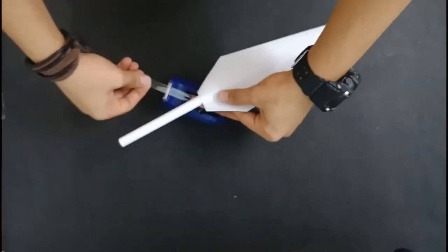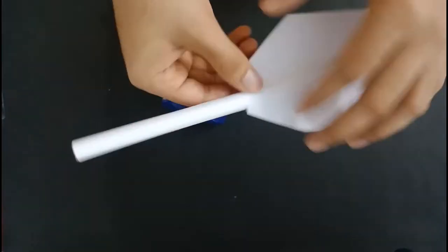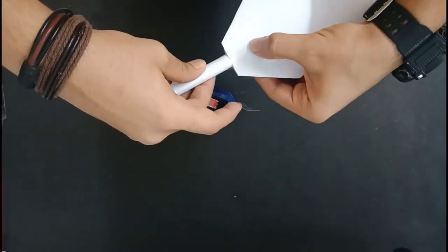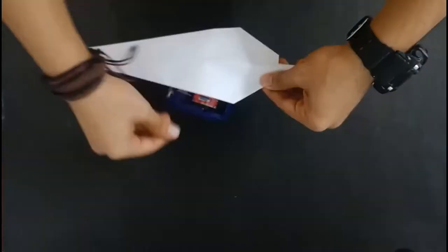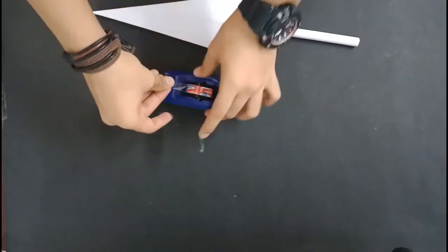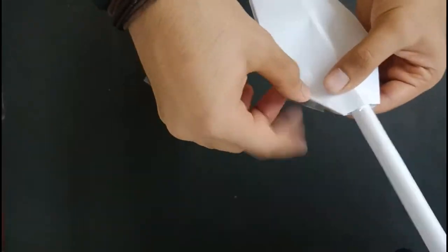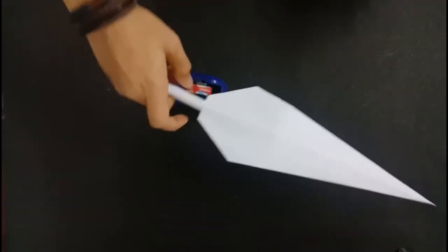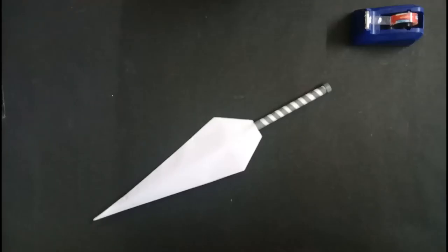Now tape it in place so that it won't fall away. That's it, the kunai is done. I rolled some grey paper around the handle to make it look more cool.